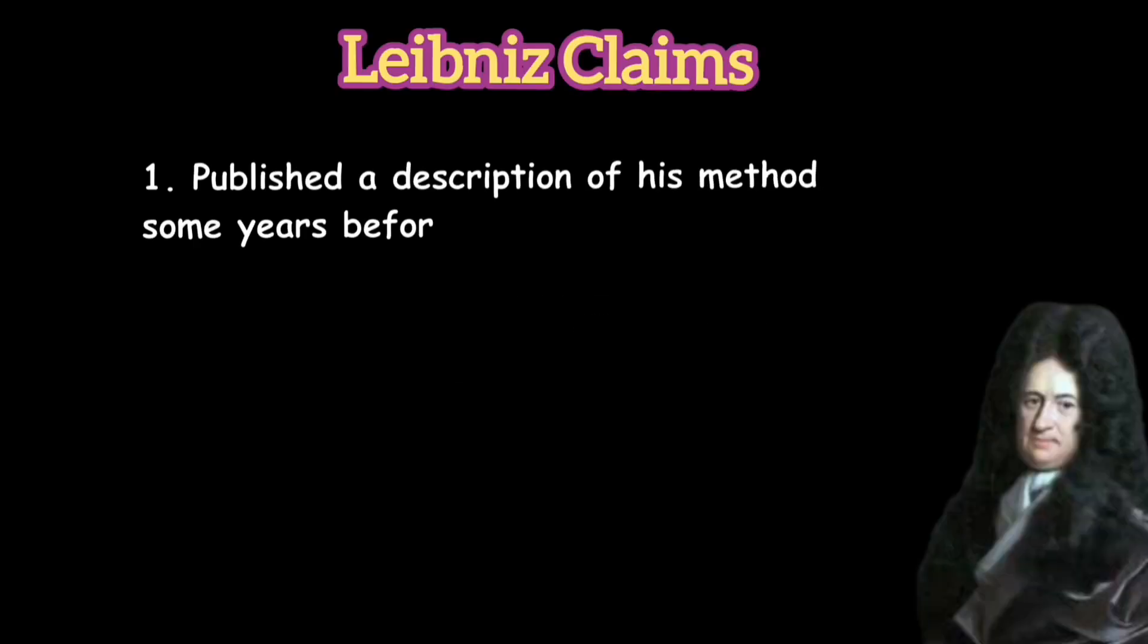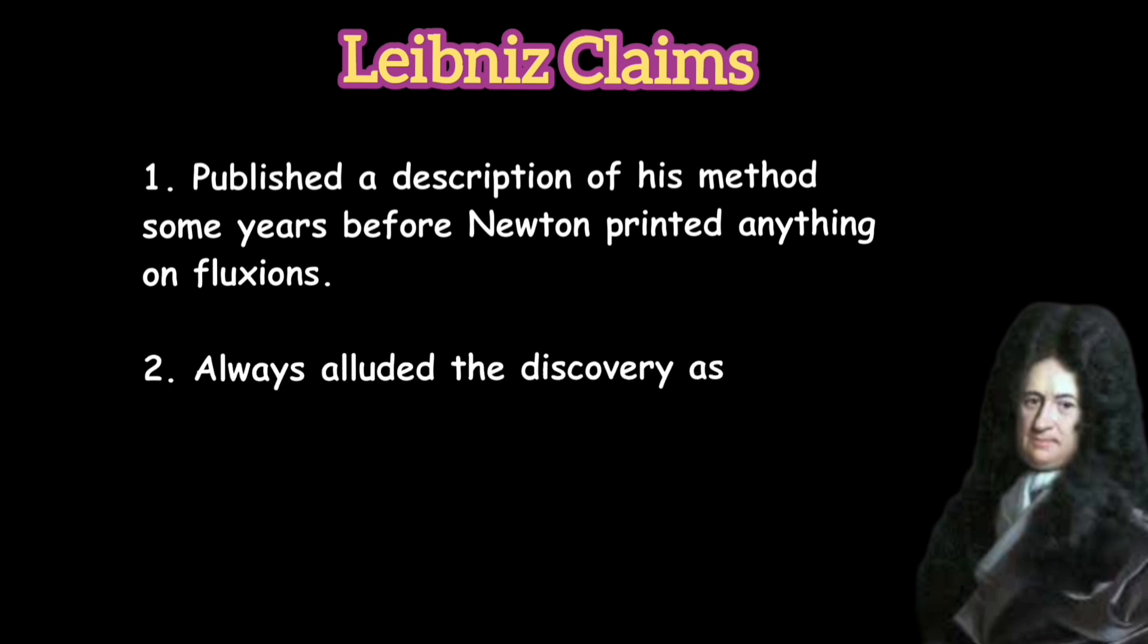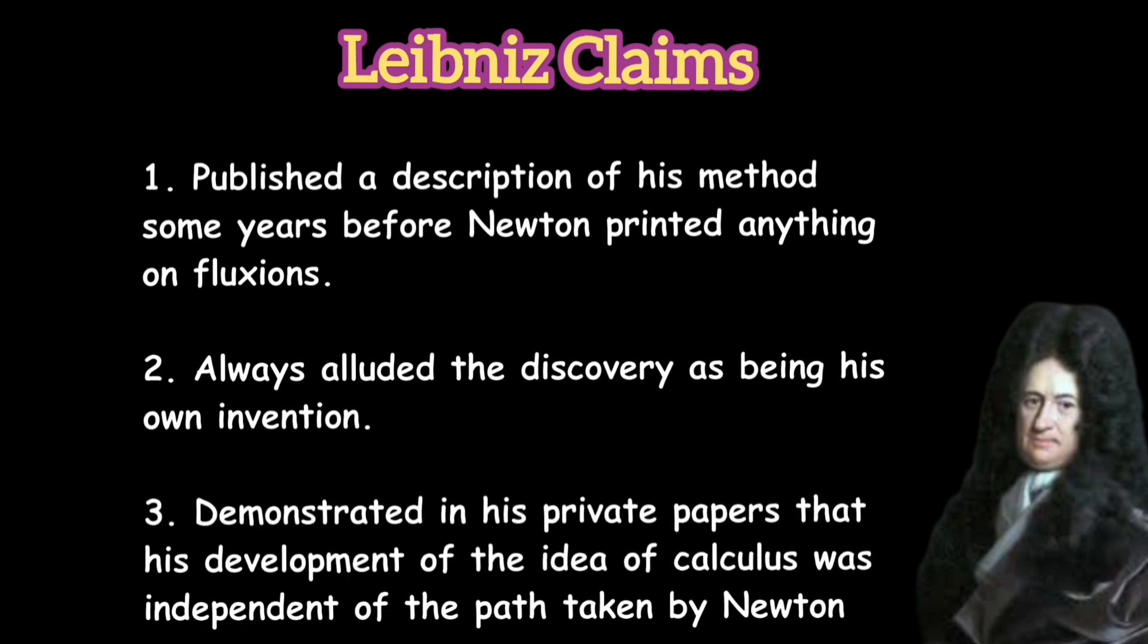The controversy which formally began in 1699 and broke out in full force in 1711. Leibniz published his work first but Newton's supporters accused Leibniz of plagiarizing Newton's unpublished ideas. Leibniz claimed that he invented calculus independently of Newton rests on the basis that he published a description of his method some years before Newton printed anything on fluxions, always alluded the discovery as being his own invention, and demonstrated in his private papers that his development of the idea of calculus was independent of the path taken by Newton.